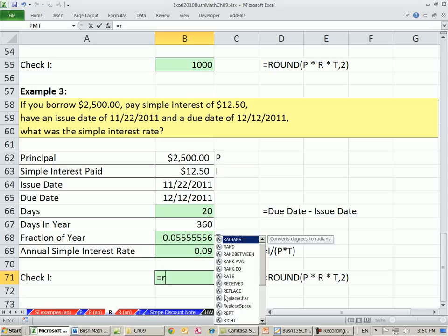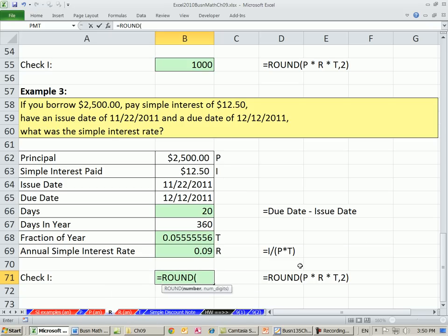Let's check it. Equals round, I'm going to take principal times our newly calculated rate times our time, comma 2. And that should give us $12.50. Yay, it gives us $12.50.